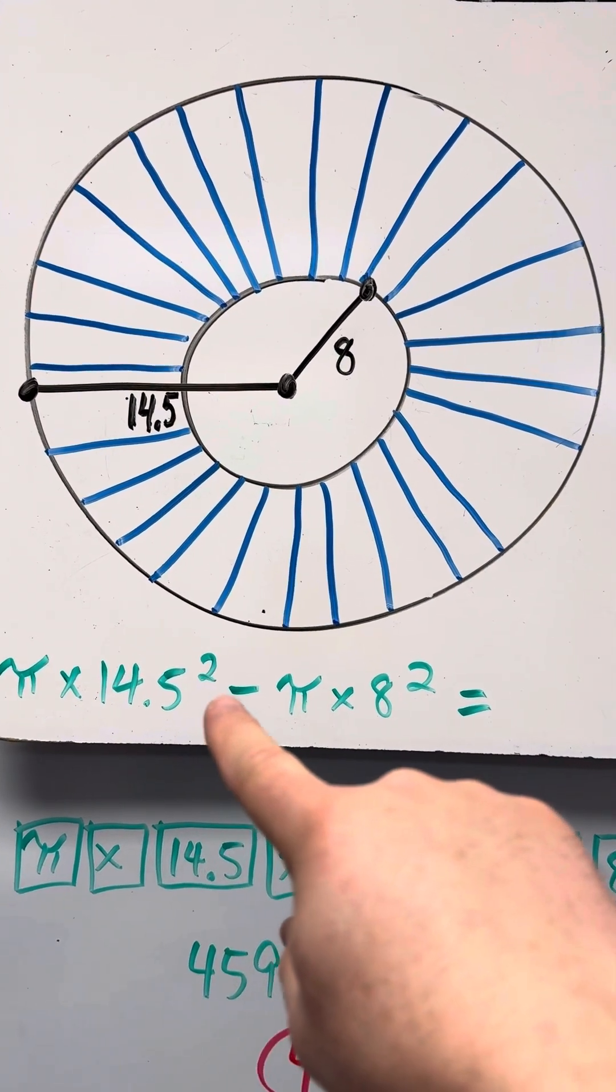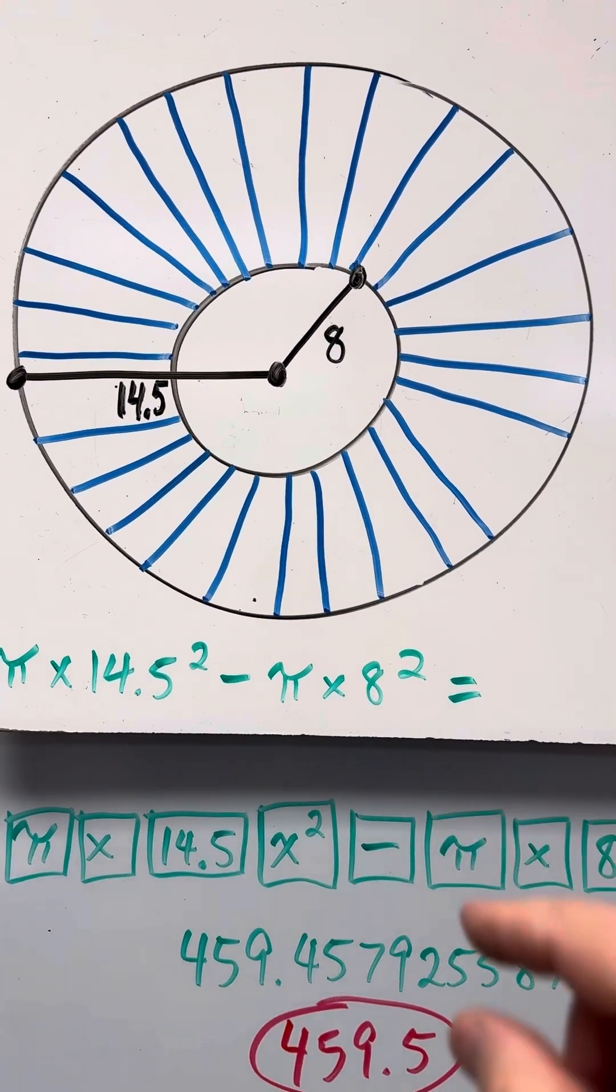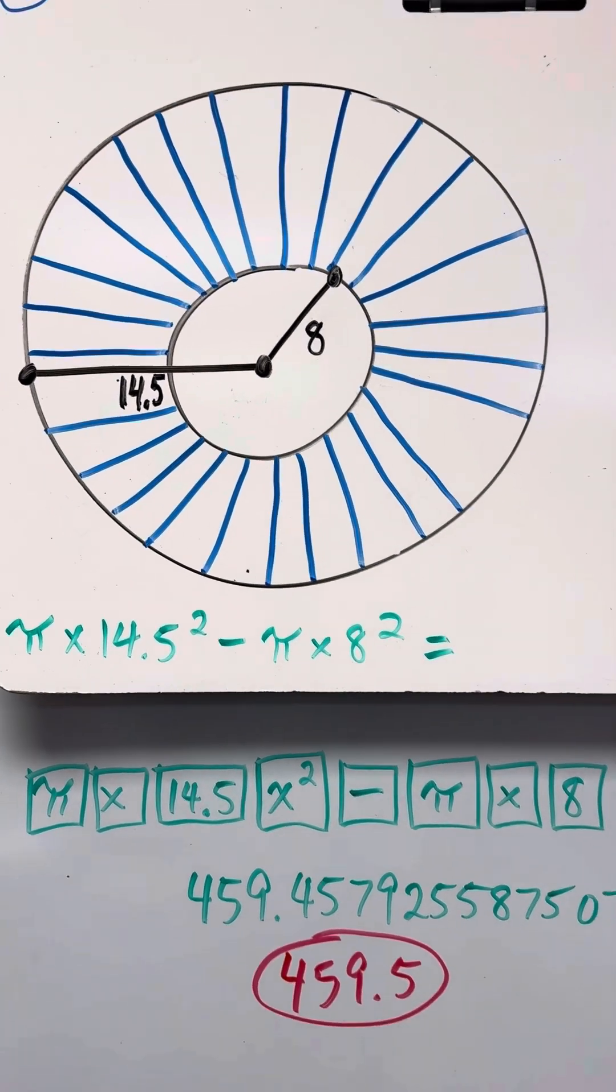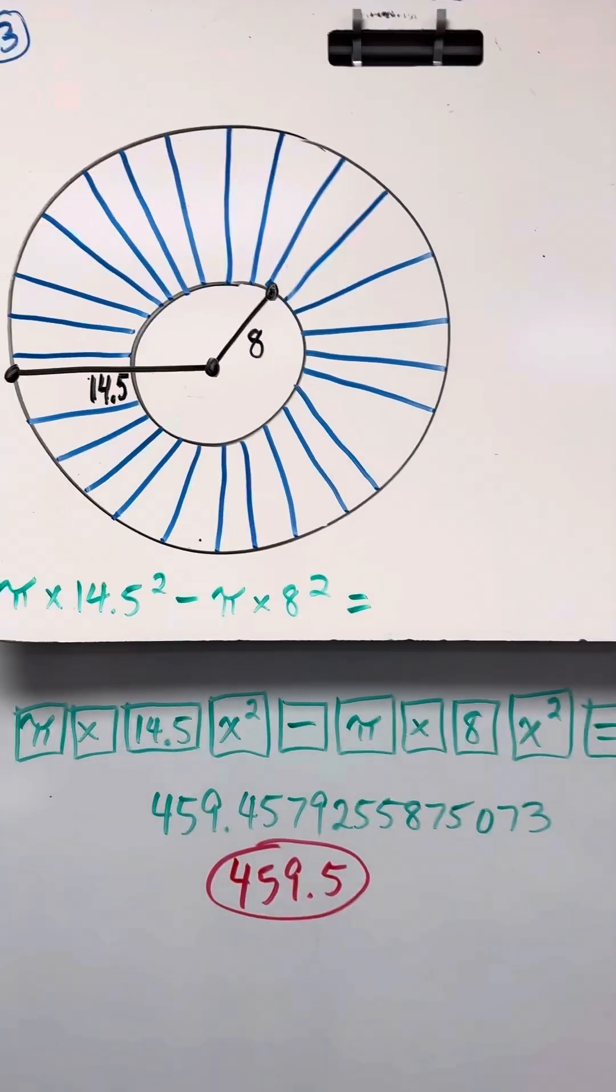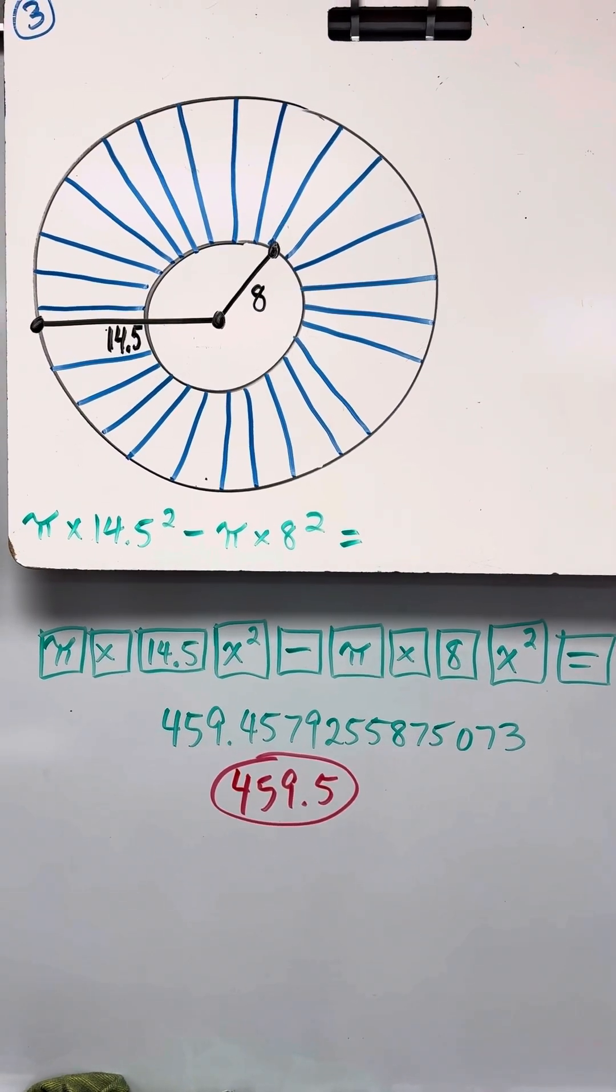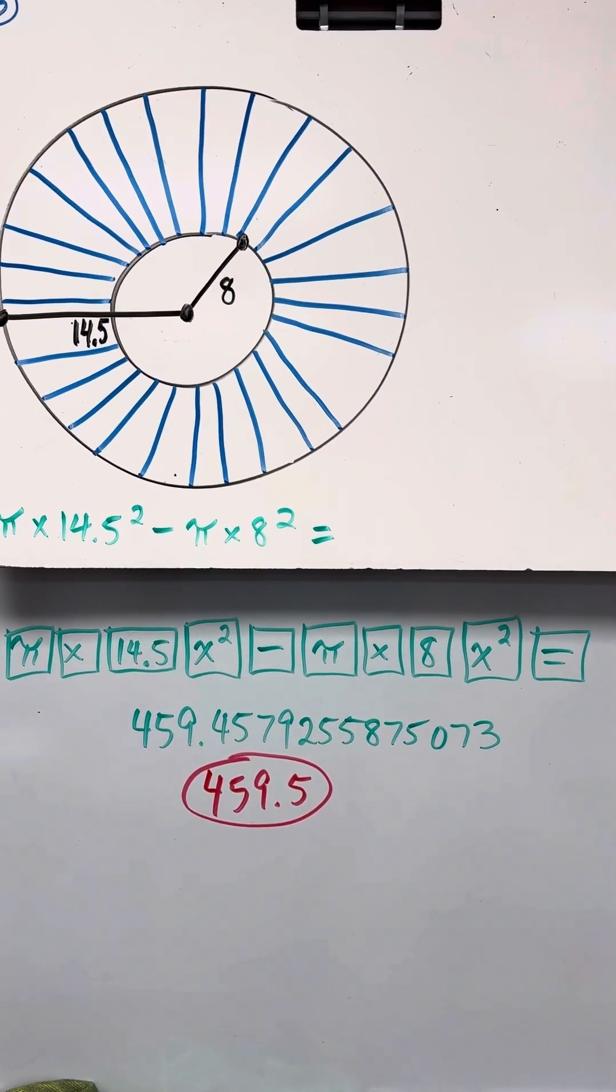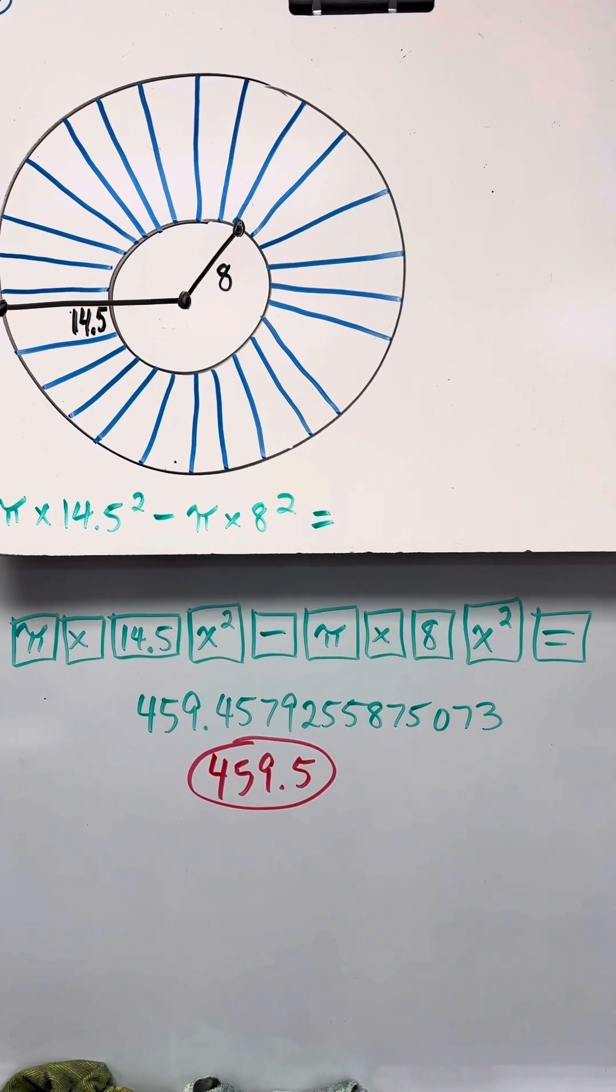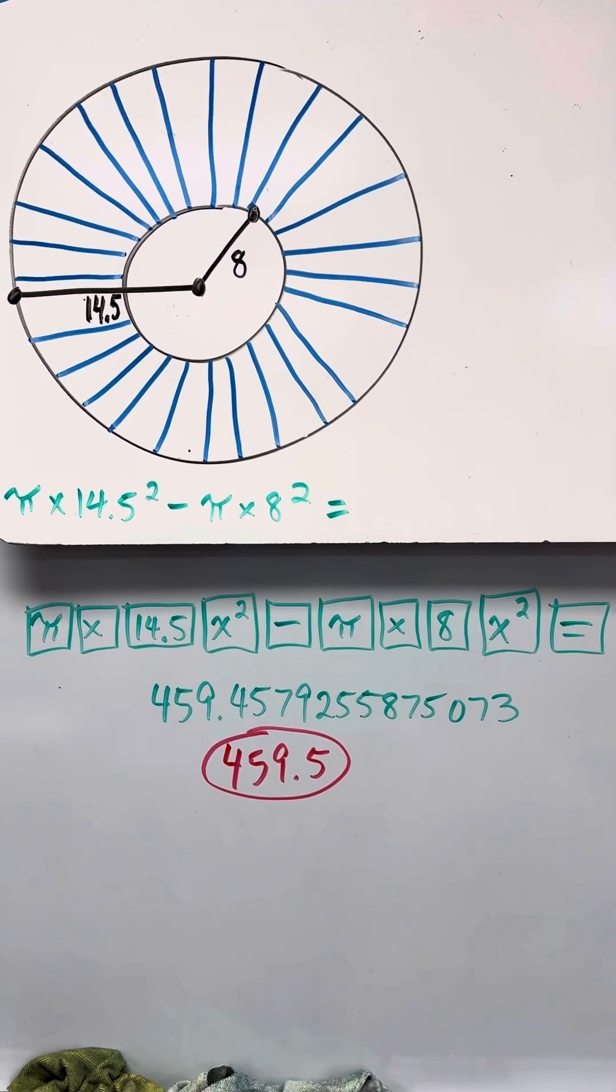Pi times 14.5 squared minus pi times 8 squared. Do the same thing on your calculator. Pi times 14.5 x squared minus pi times 8 x squared, hit equals.